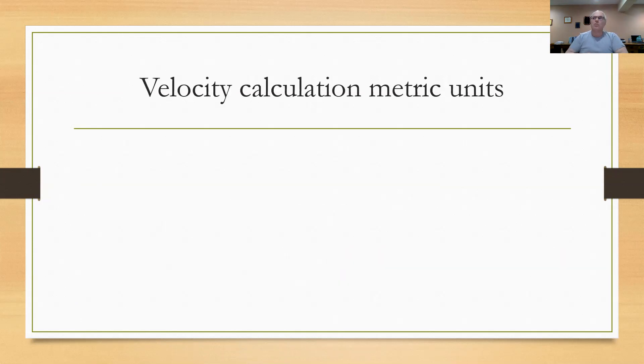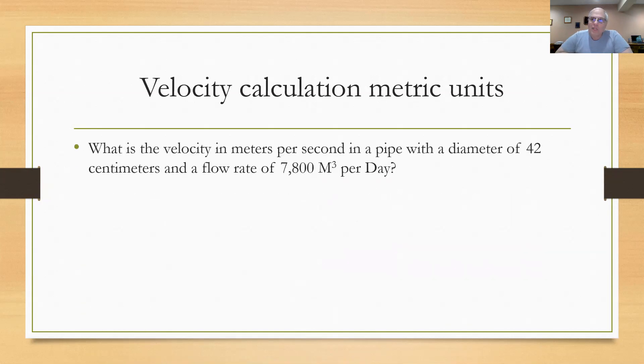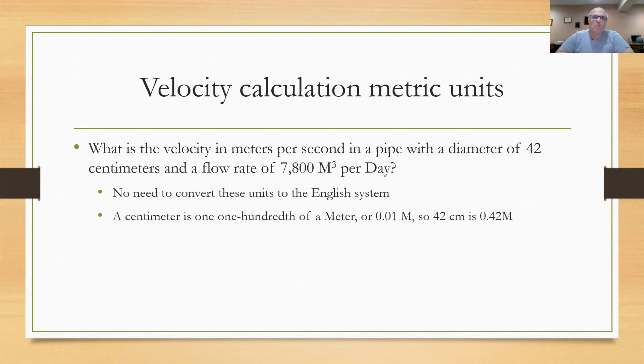Here's a calculation for velocity using metric units. This showed up on a class three exam in Ohio years ago. What's the velocity in meters per second in a pipe with a diameter of 42 centimeters and a flow rate of 7800 cubic meters per day? When you see something like this, don't be tempted to change metric to English units. Just stay in the metric units. It's a lot easier and you won't get mixed up. A centimeter is one one-hundredth of a meter or 0.01 meters. So that 42 centimeter diameter works out to 0.42 meters.